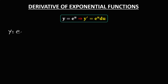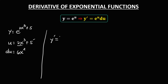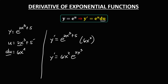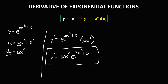For y equals e to the power 2x cubed plus 5, u is 2x cubed plus 5. For the derivative of u: the derivative of 2x cubed is 6x squared, and the derivative of 5 is 0, so du is 6x squared. To find the derivative: e to the power 2x cubed plus 5, times du which is 6x squared. Therefore, y prime equals 6x squared times e to the power 2x cubed plus 5. This is now the derivative.